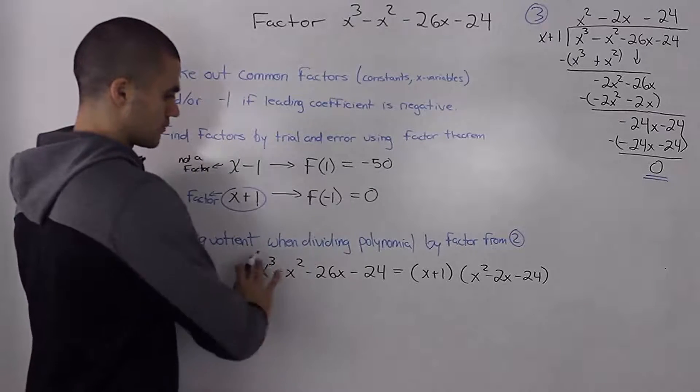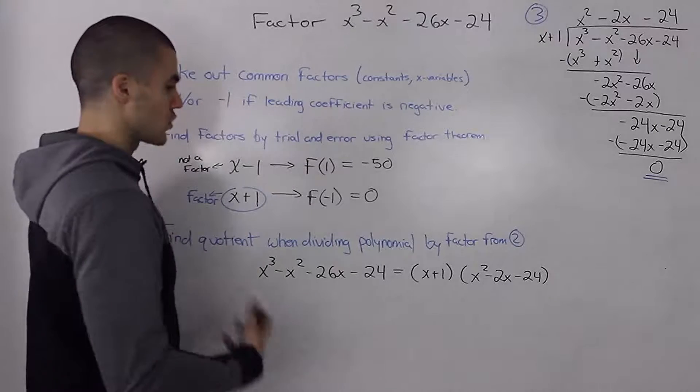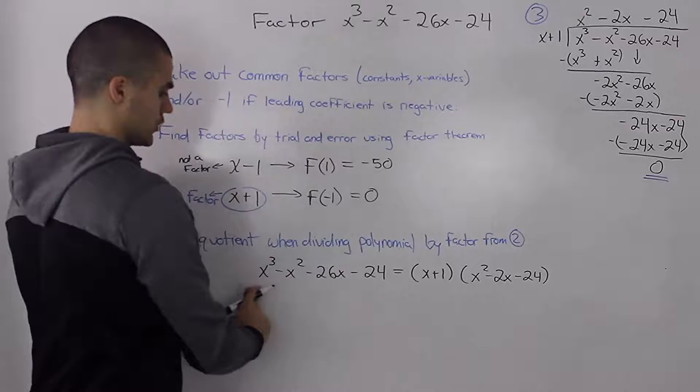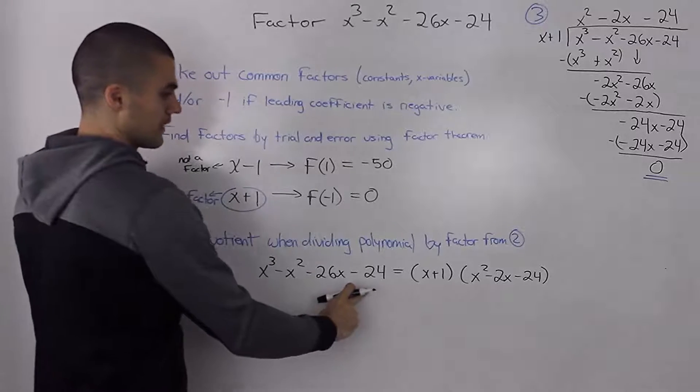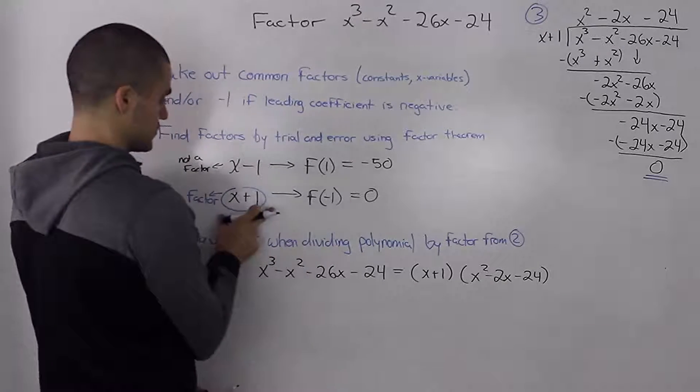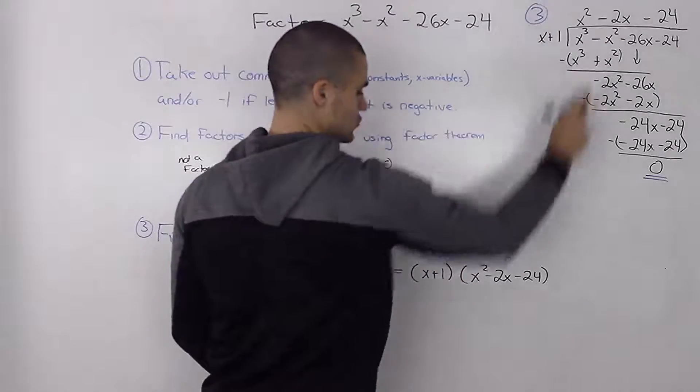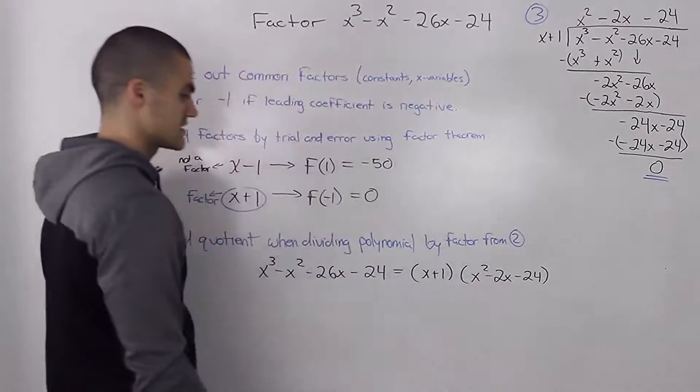So after step three we could write out what result we have so far in the factoring process. So we got our polynomial, our original polynomial, and now we split it up into the factor that we found in step two and the quotient that we found in step three.